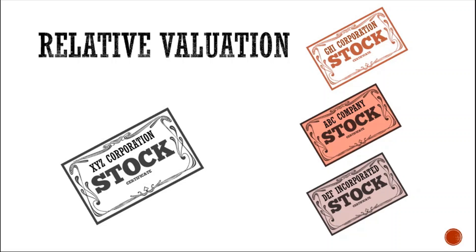We also need a way to scale the value to make the comparables compatible. If their stock prices are 20 pesos, 9 pesos, and 33 pesos respectively, we cannot simply take their average immediately — these stocks have different variables such as book values and earnings per share. For example, DEF has a stock price of only 9 pesos but maybe 100 million shares outstanding, giving a 900 million market cap. GHI's stock price is 33 pesos, but with only 100,000 shares outstanding, its market capitalization is only 3.3 million — significantly lower than DEF's.